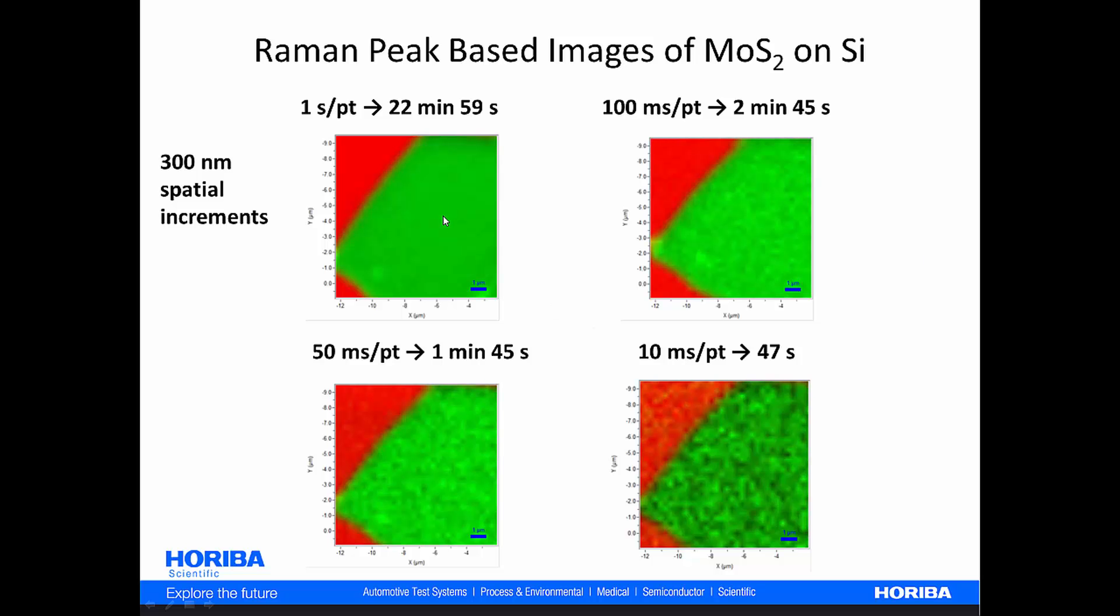And so what I hope you can see here is that in moving from one second per point at a total of essentially 23 minutes of integration time to a tenth of that time, two minutes, 45 seconds, where you go to 100 milliseconds per point, down to 50 milliseconds per point, you can really cut your times and still maintain pretty decent imaging. And finally, at 10 milliseconds per point, we're starting to get some fairly grainy image, which is consistent with the signal to noise of the spectrum.